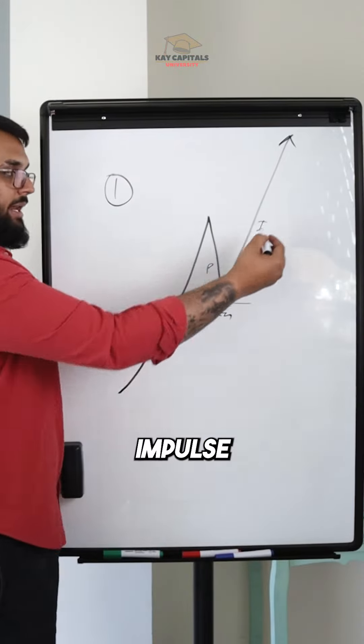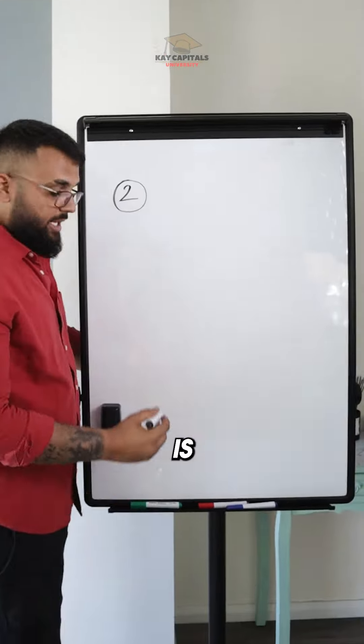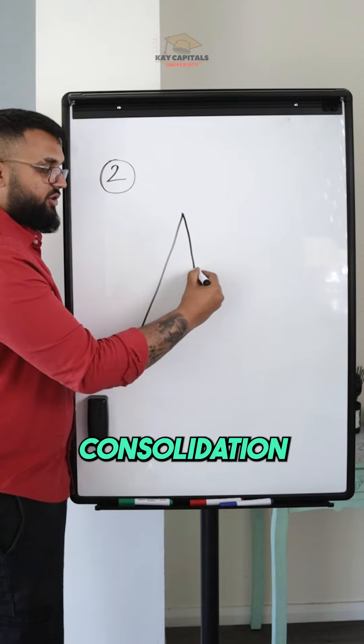Impulse, pullback, and impulse. That's the number one market structure.